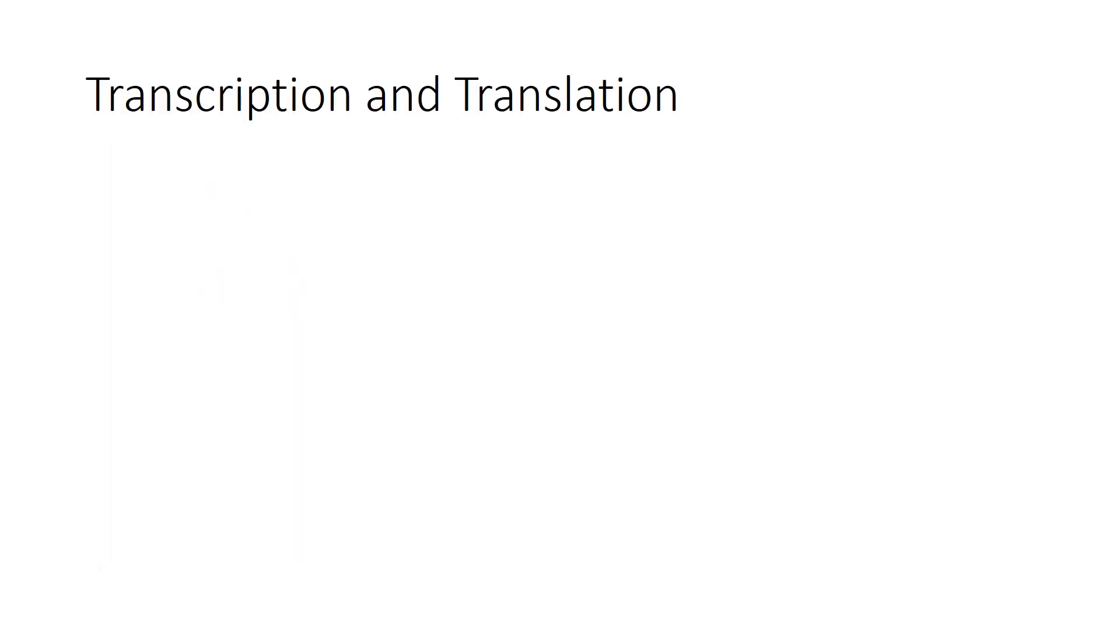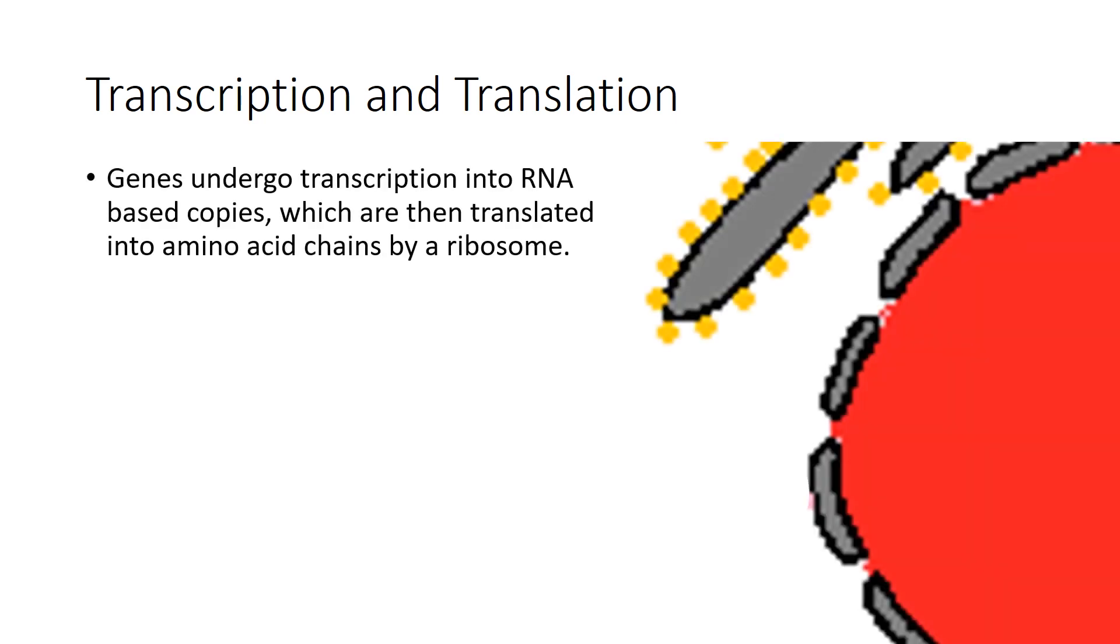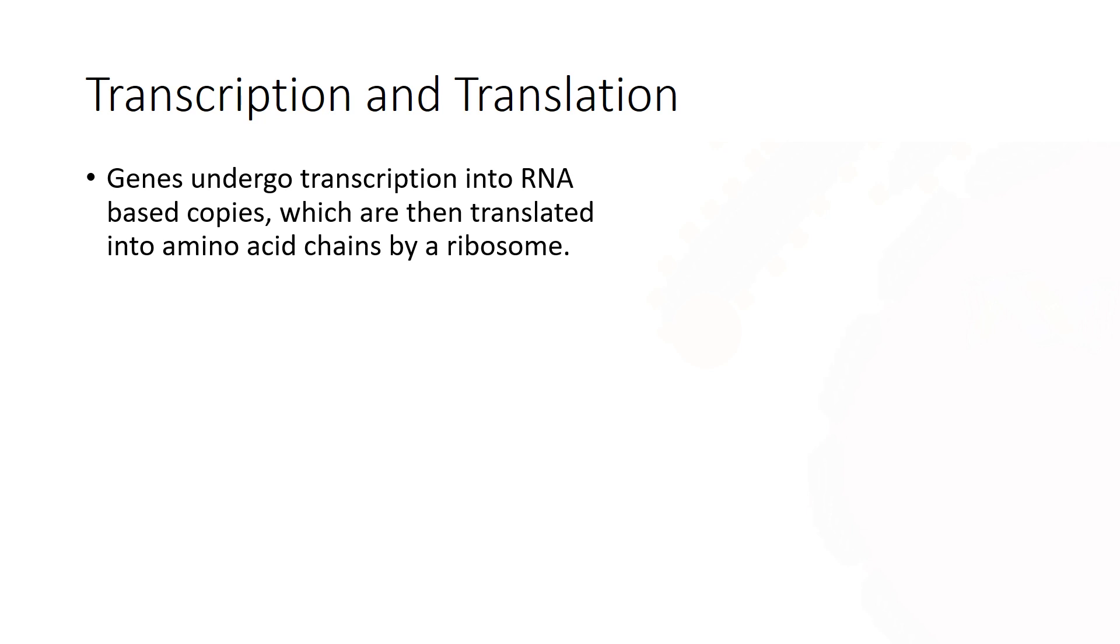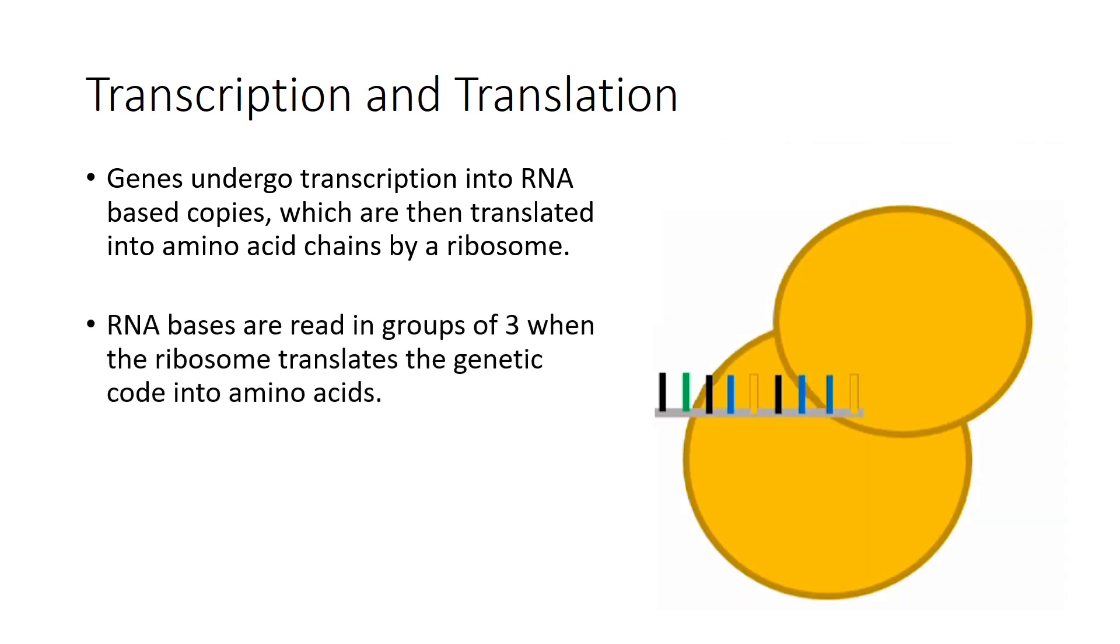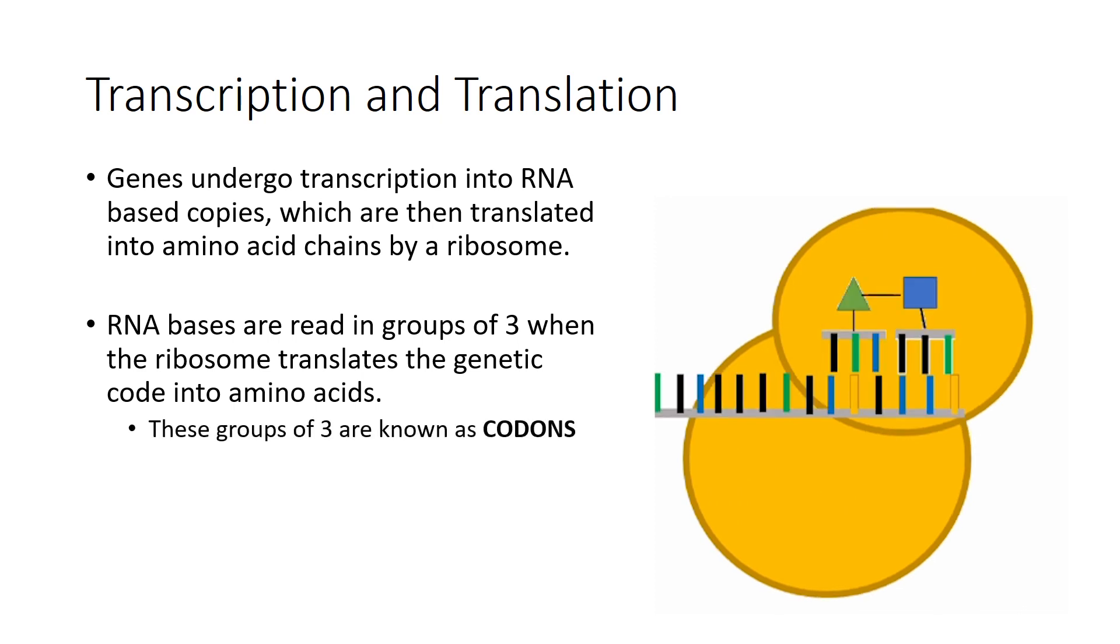You can find out more about these processes in the video linked here, but to summarize the process, the gene of interest is copied into a temporary, single-stranded copy made out of RNA, which is then read by a ribosome. This is where the sequence is translated into an amino acid chain. In the translation process, the RNA sequence is read in groups of three bases to give the instruction for which amino acid needs to be added next. This group of three bases is called a codon.